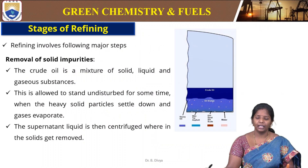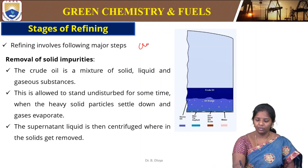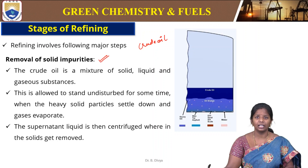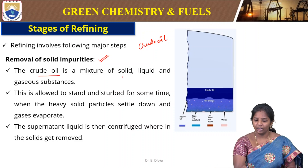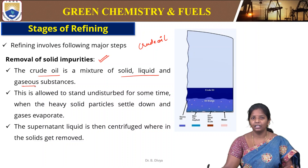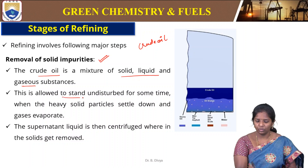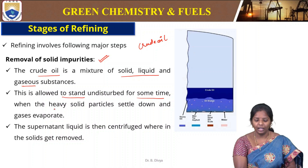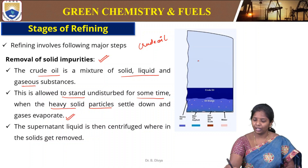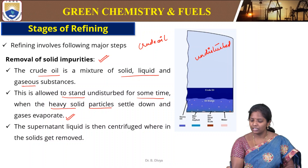The main stages begin immediately after we get crude oil. The first step is the separation of solid impurities. Crude oil is a mixture of solid, liquid and gaseous substances from the earth, so it is allowed to stand undisturbed for some time. Heavy solid particles settle down and gases evaporate. Solid particles such as dirt, sand, silt and scales settle down, while the crude oil rises to the top.